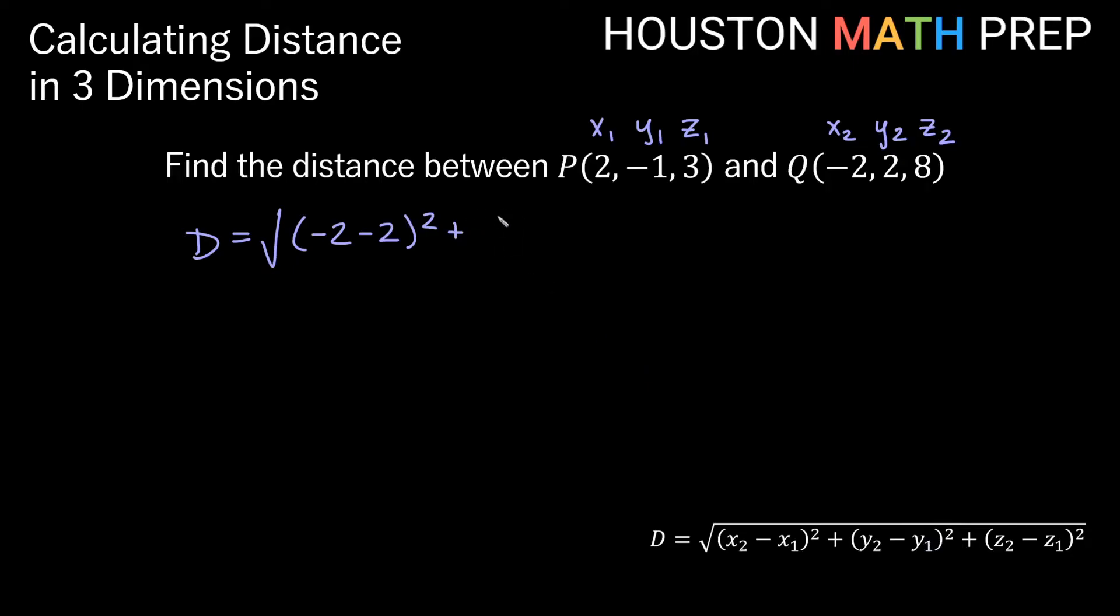plus y2 minus y1 quantity squared. That's going to be 2 minus (-1) quantity squared, plus z2 minus z1 squared, which will be 8 minus 3 here, all squared. And we'll have our root over all of that. So now we'll go ahead and simplify some of this here. In the parentheses -2 minus 2, that'll give us (-4)^2, plus this is like 2 plus 1, so that will be 3^2.